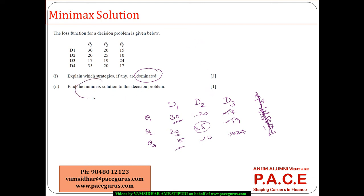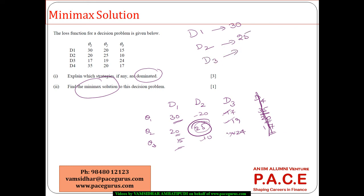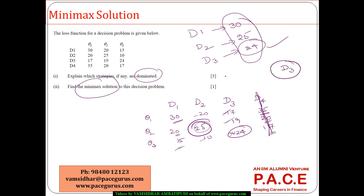Now I am trying to see which decision is most appropriate using the minimax solution. Minimax clearly says: first find the maximum loss in each of the cases. When adopting a d1 strategy, the maximum loss is 30. When adopting a d2 strategy, the maximum loss is 25. When adopting a d3 strategy, the maximum loss is 24. The minimax criterion says take the minimum of these — so 24 is the minimum, which means the most optimal strategy is d3, wherein at most I am going to lose 24. That is the minimax solution.